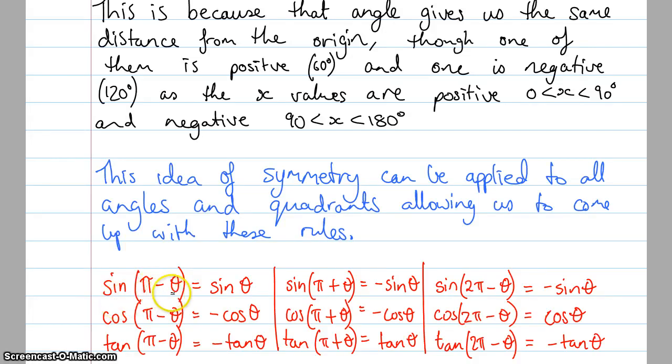Sine of pi minus theta is sine theta. Cos of pi minus theta is negative cos theta. If I just draw that quickly, pi minus theta, which is there, that will give me the exact same answer as cos of theta, which is there. Same x value, one of them is positive, and one of them is negative. So we'd say that cos of 150 will be the same as cos of 30, except it's a negative. Tan of 150 will be the same as tan of 30, except it's a negative.